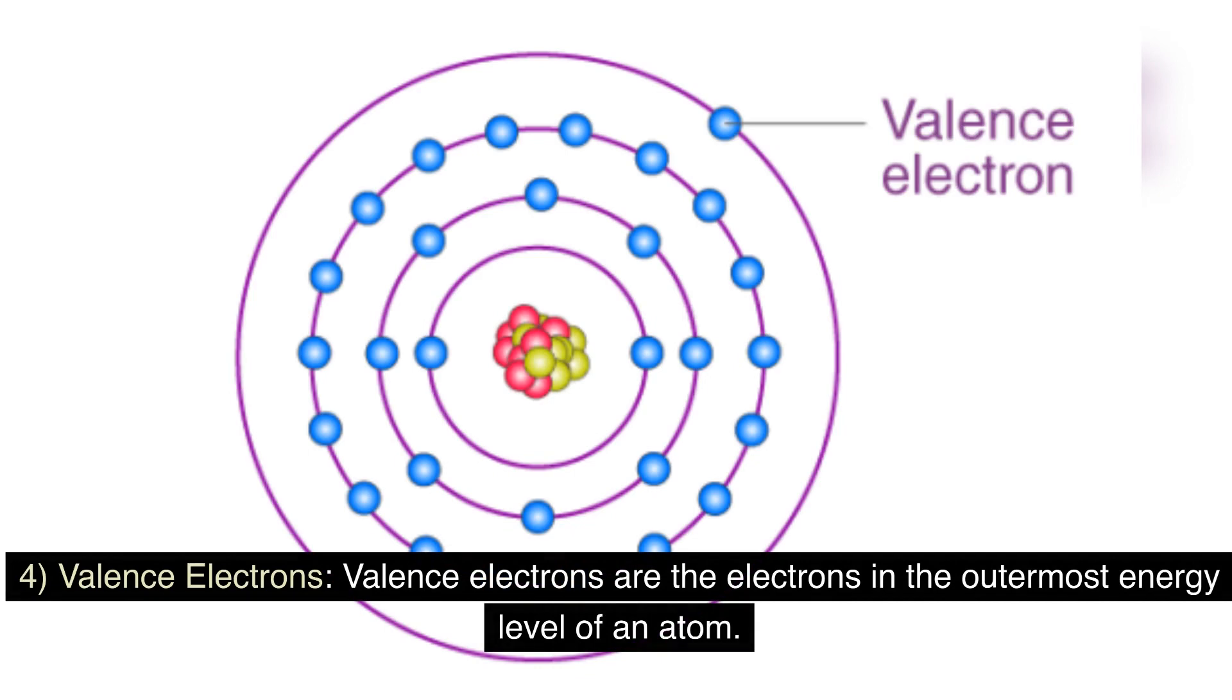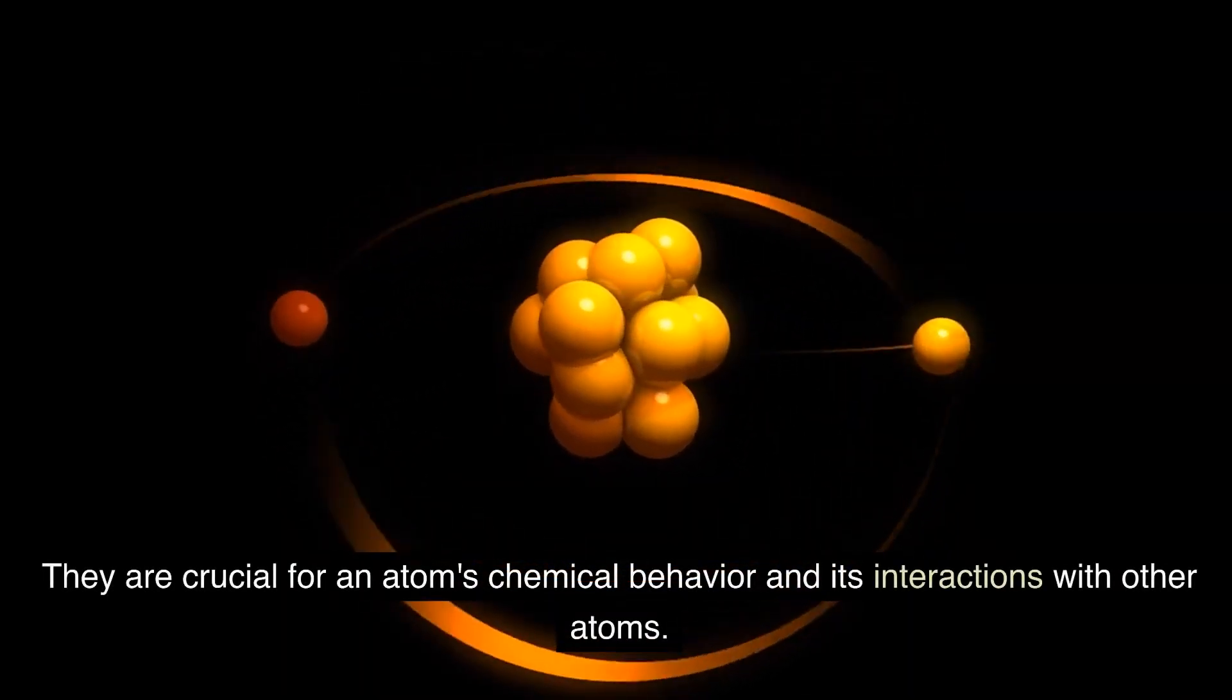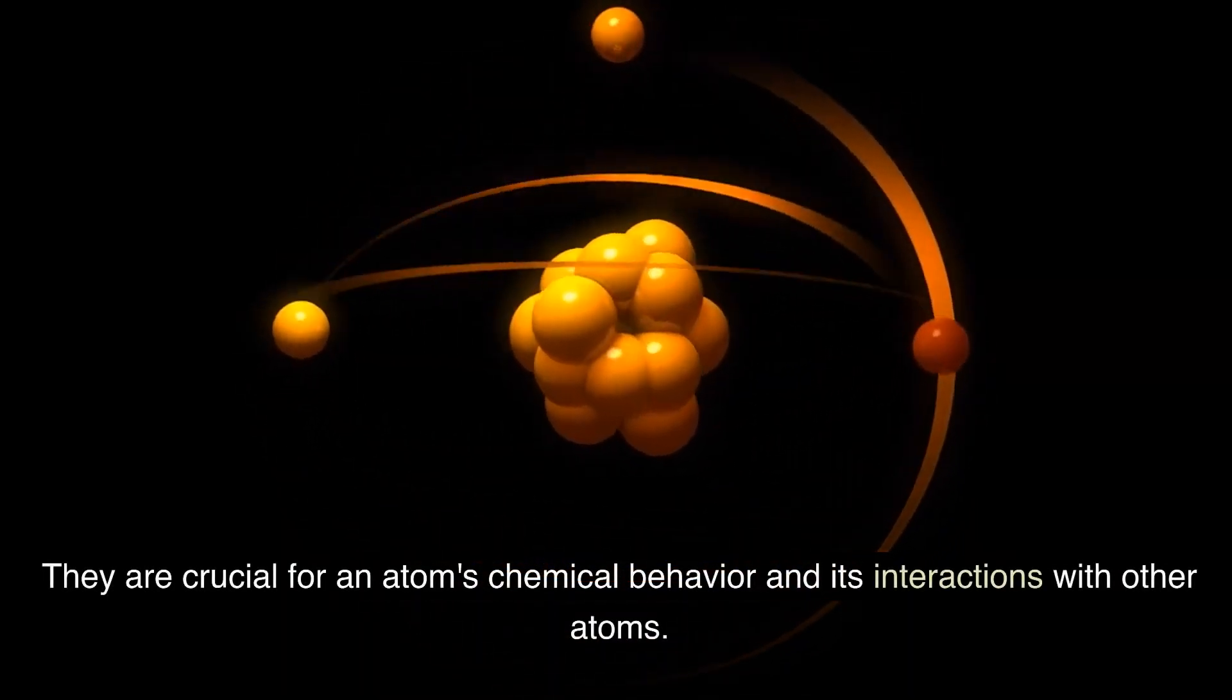Valence electrons: valence electrons are the electrons in the outermost energy level of an atom. They are crucial for an atom's chemical behavior and its interactions with other atoms.